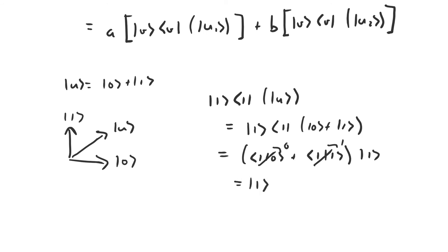So the end result of applying this projection to the vector u is just the vector one. What this operator has done is taken the component of u that's along the basis vector one and projected it out — that's why this is called a projection. Maybe it'll be more clear if you think about this graphically. Imagine we place some light source off to the right and shine it onto the vector u such that it forms a shadow along this vertical piece here. The shadow it forms is the result of applying the projection operator onto u. That's why it's called a projection — that's actually originally how it got its name, probably hundreds of years ago.